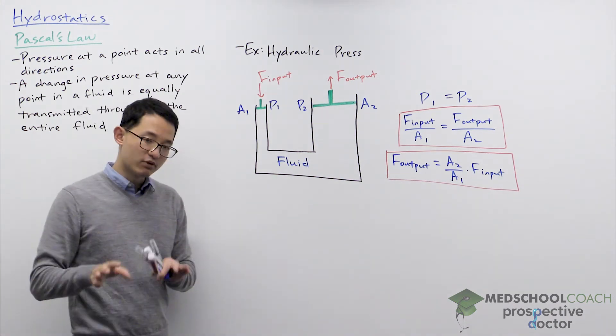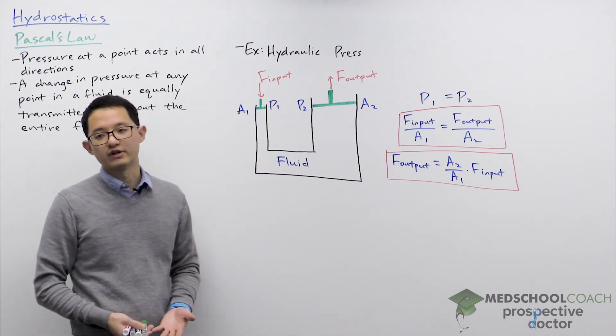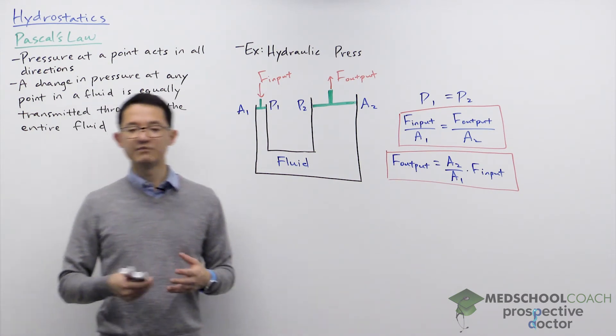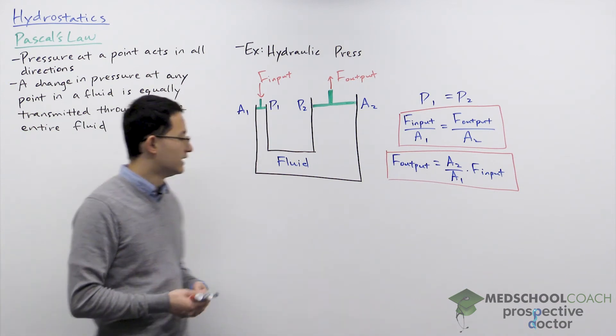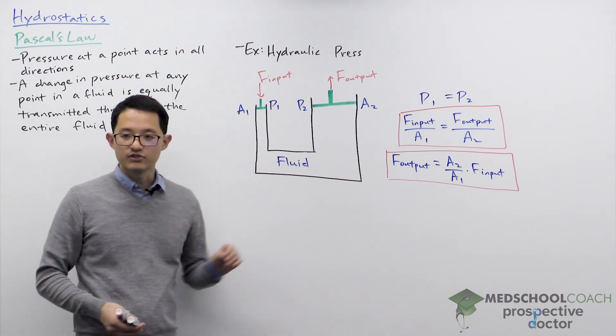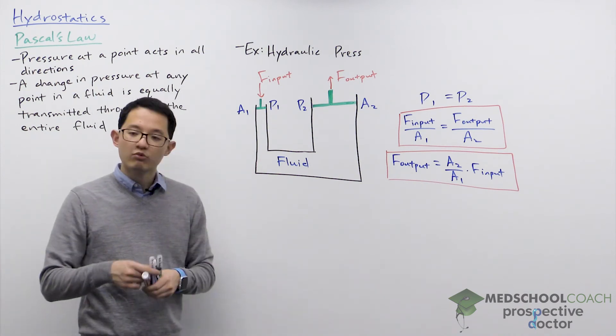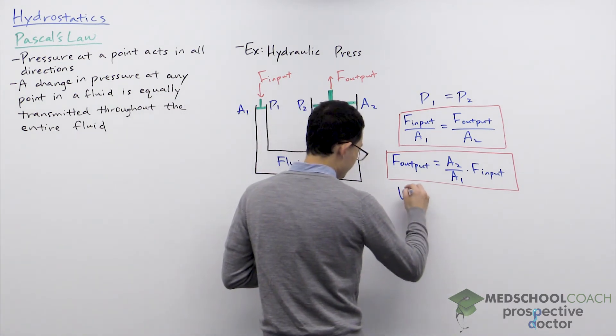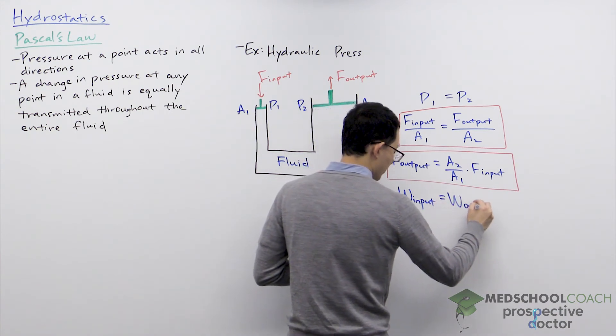At the same time an important thing to understand is here we are putting in a weaker force and we're getting a larger output force. This should remind you of the idea of simple machines which we discussed in our physics videos on work and energy. And indeed this is a similar idea. Even though the hydraulic press will amplify the force that we provide, our input force, it will not change the amount of work done. So that means the input work has to be equal to the output work.